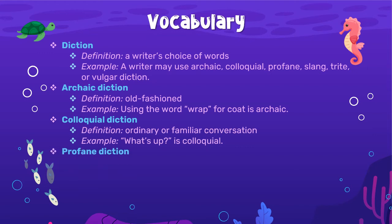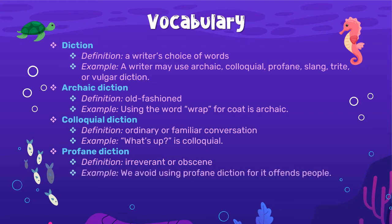The last one we're going to look at today is profane diction. This is wording that is irreverent or obscene, meaning it's very sacrilegious — it's not something that God would approve of; it's dirty, nasty, ugly. We avoid using profane diction because it offends people. For example, taking God's name in vain would be considered profane diction — that's saying any form of God's name when you're not talking to him. If someone says 'Dios mío,' you're saying 'my God,' but you're not actually talking to God. So we have to be very careful about how we speak about God and how we use his name.